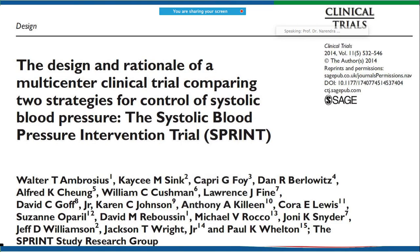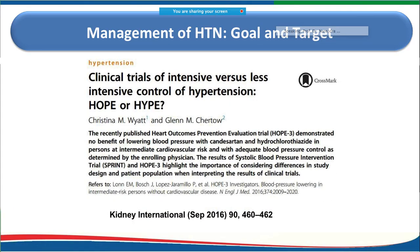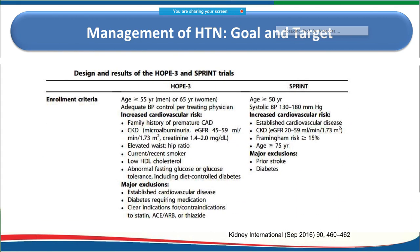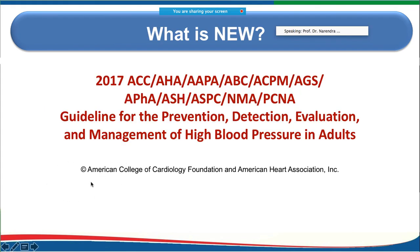Several studies have explored strategies to control systolic hypertension — for example, the SPRINT trial, and comparisons of intensive versus less intensive control such as HOPE-3 versus SPRINT. These efforts have driven updated guidelines on how to treat, detect, evaluate, and manage high blood pressure in adults.